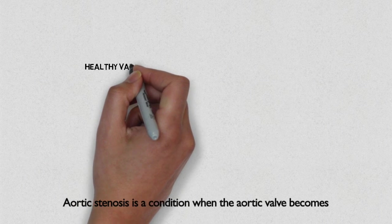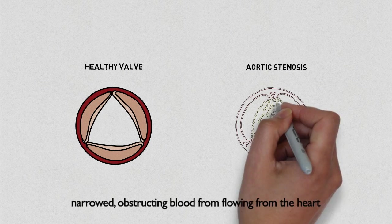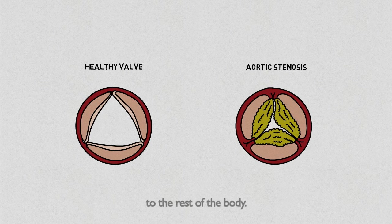Aortic stenosis is a condition when the aortic valve becomes narrowed, obstructing blood from flowing from the heart to the rest of the body.